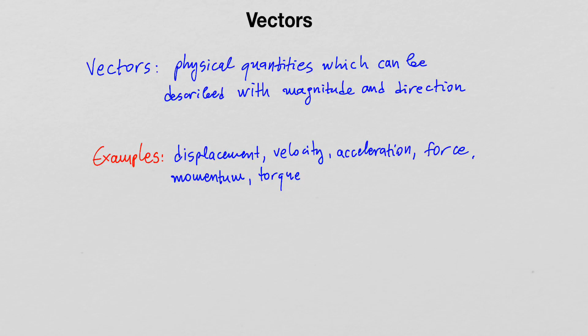Acceleration is another example of a vector quantity. We know that objects, when they accelerate, either speed up or slow down depending on how the acceleration acts on the object. For a moving car, when speed increases, the acceleration points in the same direction as the direction of motion. However, if a car is slowing down, the acceleration points in the opposite direction to the motion. So the concept of direction is very important for acceleration.